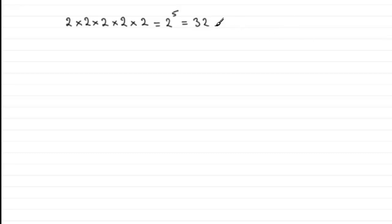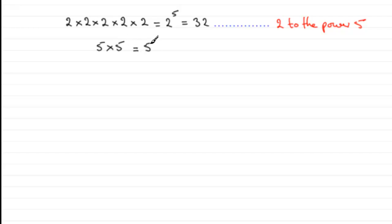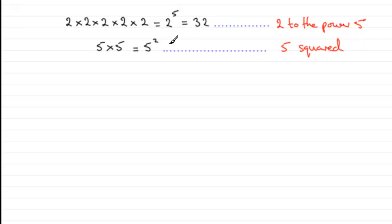So let's write down how we pronounce that: it's pronounced as two to the power five. Now if I had something like five times five, for short this would be written as five to the power two. It's okay to say five to the power two, but for the power of two we tend to say it as squared. So we would read this as five squared — the squaring idea means to the power two.